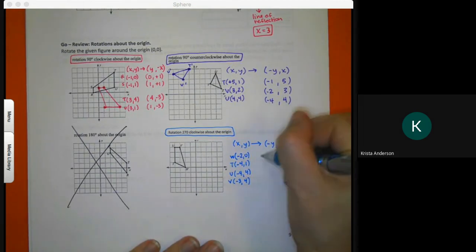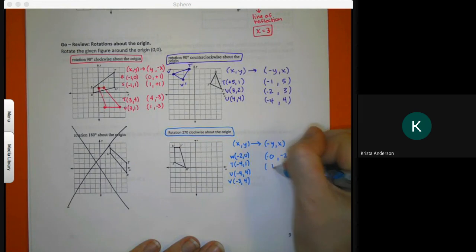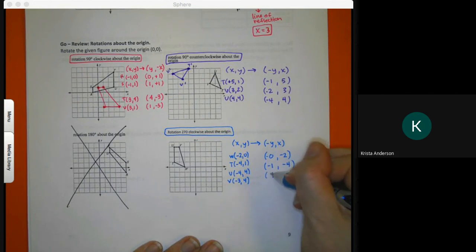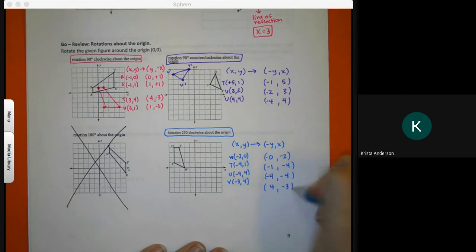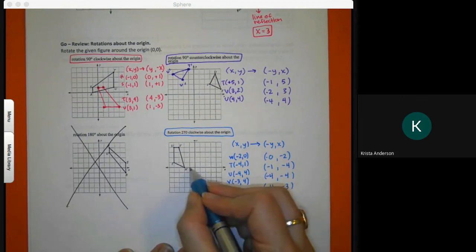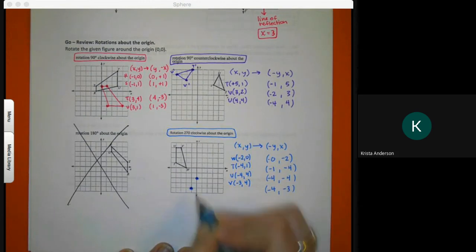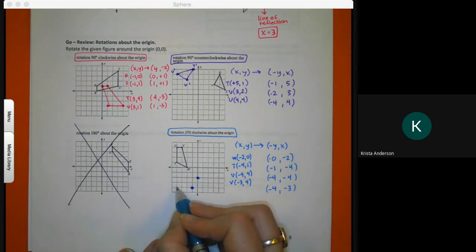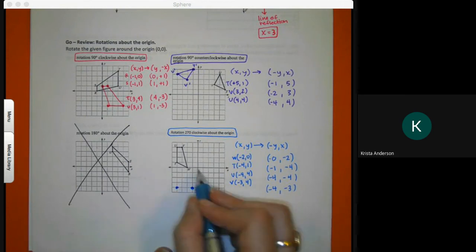I switch my x and y and I change the left number sign. Flip my numbers, switch the sign on the left. Switch my numbers, flip the sign on the left. Switch my numbers, flip the sign on the left. Zero negative two, negative one down four, negative four down four, negative four down three.